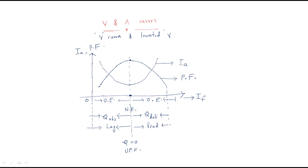So the V curve is the relation between armature current and field current, and the inverted V curve is the relation between power factor and field current. This is a very important topic. The same phenomena apply to generators, but for generators the leading and lagging behavior is reversed — that is the only difference.